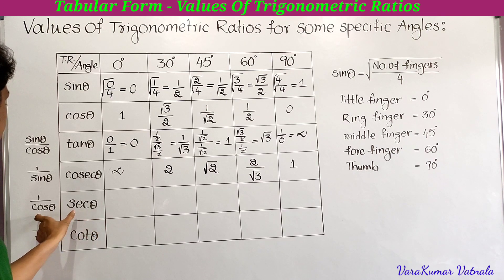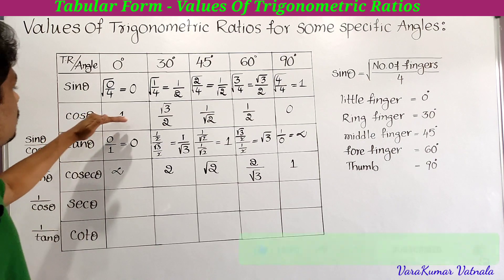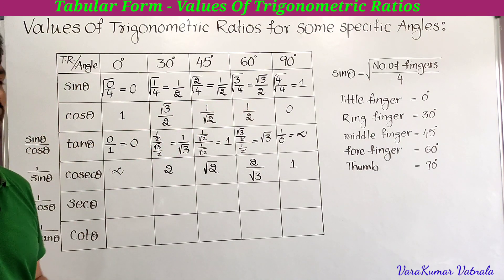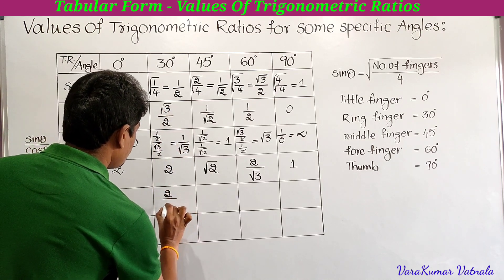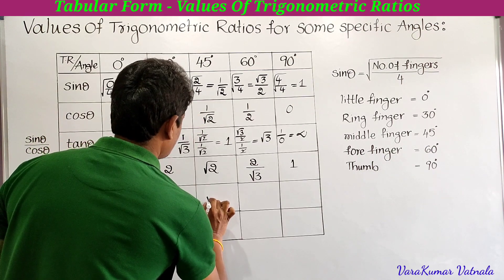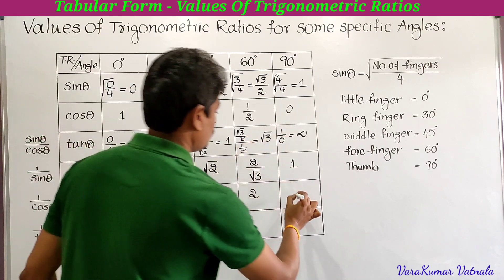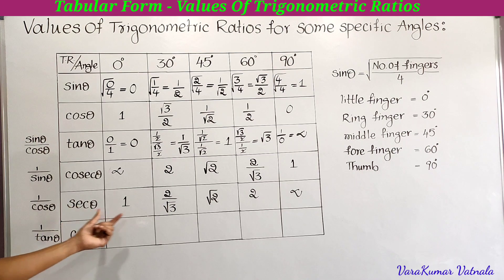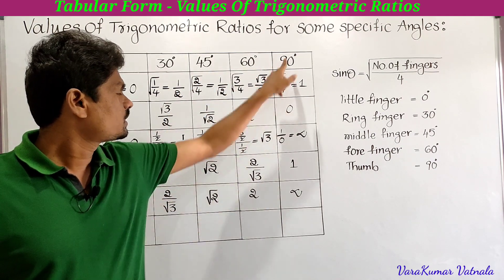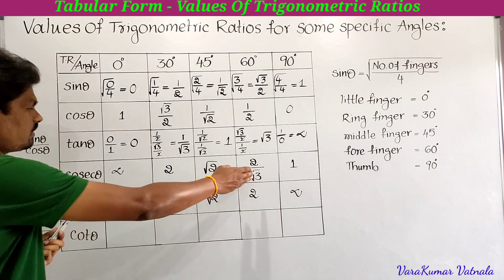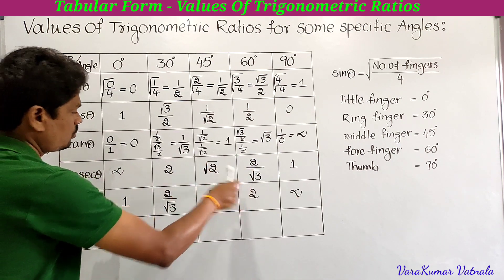For sec theta values, sec θ = 1/cos θ, so we write the reciprocals of cosine values. sec 0° = 1/1 = 1; sec 30° = 2/√3; sec 45° = √2; sec 60° = 2; sec 90° = 1/0 = infinite. You can also write these as the reverse of cosec values: 1, 2/√3, √2, 2, infinite.